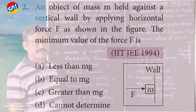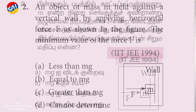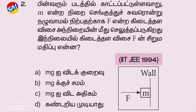An object of mass M is held against a vertical wall by applying a horizontal force F, as shown in the figure. The minimum value of the force F is: less than Mg, equal to Mg, greater than Mg, or cannot be determined. Let's talk about this.